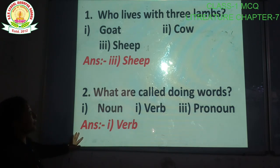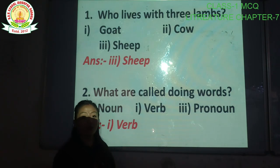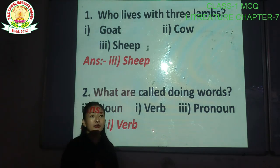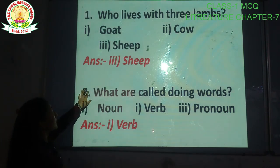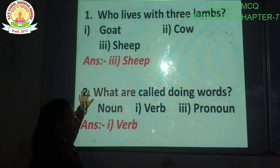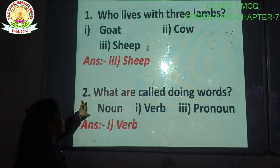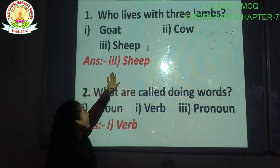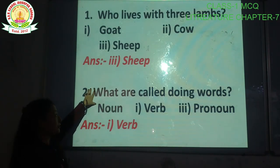Our first question is: who lives with three lambs? We already studied the story of three lambs — about three lambs and wolves. They built a house of straw, wood, and bricks, and the wolf came. This question is from that story. Who lives with three lambs? Options: one, goat; two, cow; three, sheep. Our correct answer is option number three, sheep. Who lives with three lambs? Sheep.